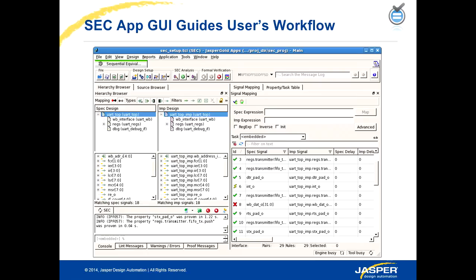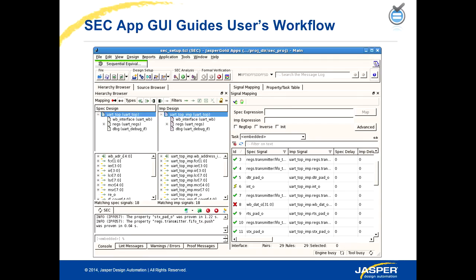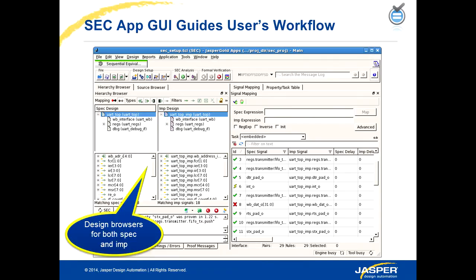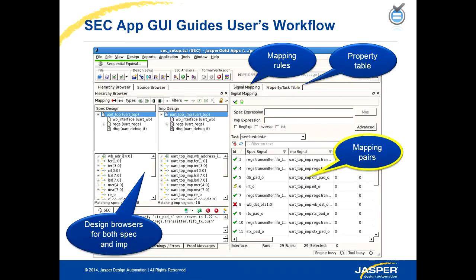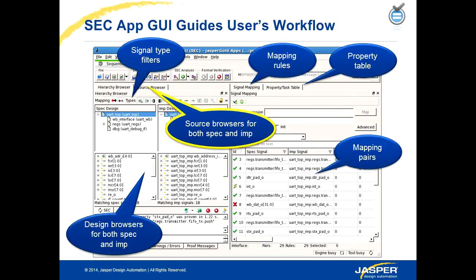This is how the SEC app GUI looks. It's well-suited for this use case because you have two versions of the design and want to look at both simultaneously. You have a hierarchy browser and a source browser, and you have the signal mapping table and property table. You see all the mappings specific to the design or module selected in the source browser. There are also filters to select inputs, outputs, black box inputs, black box outputs, undrivens, etc. You also have the source browser for both the reference design and the variation, so you can look at them side by side.